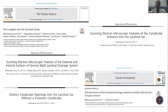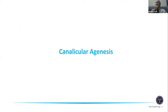Let's start with some disorders. Canalicular agenesis — if there is canalicular agenesis, there's not going to be any punctum. So every canalicular agenesis will have a punctal agenesis. But is the vice versa true? That is the important question.